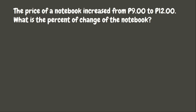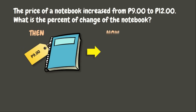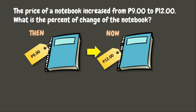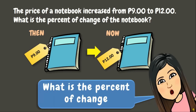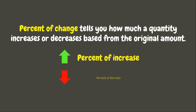Let's have our first example. The price of a notebook increased from 9 pesos to 12 pesos. What is the percent of change of the notebook? Percent of change tells you how much a quantity increases or decreases based from the original amount. There are two types of percent of change: when the original amount increases, that is percent of increase; when the original amount decreases, that is percent of decrease.